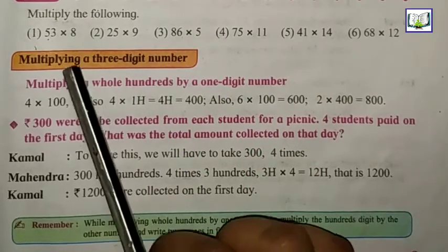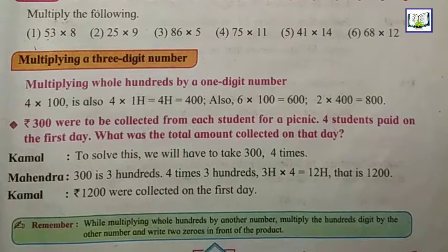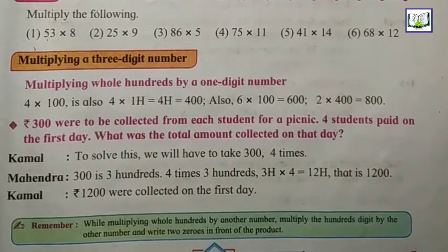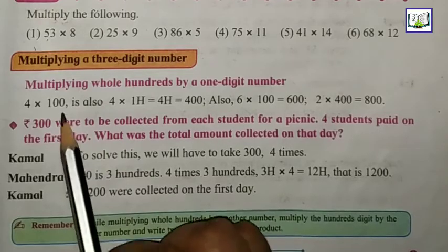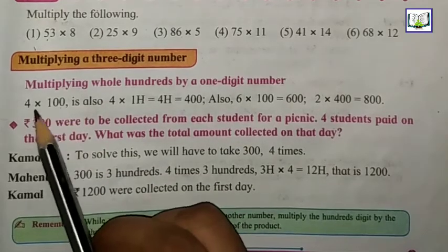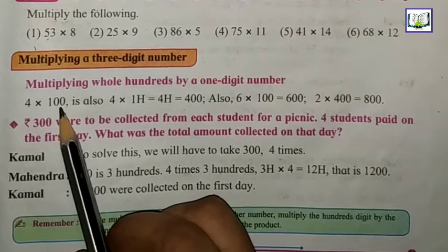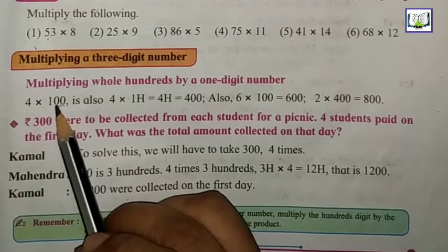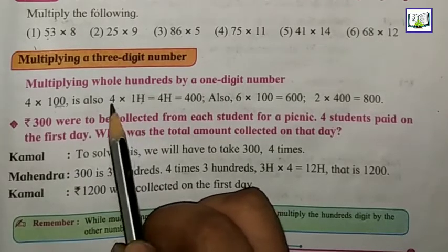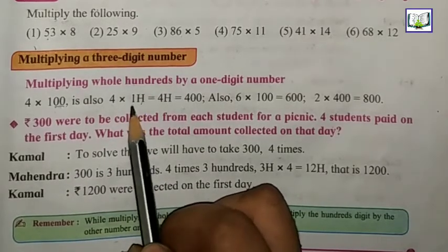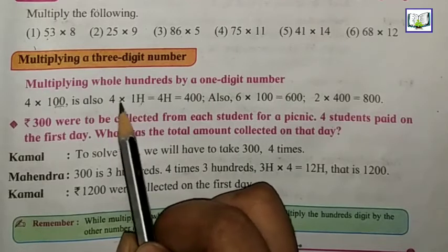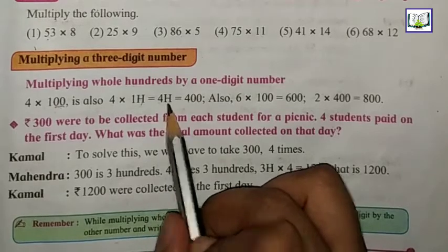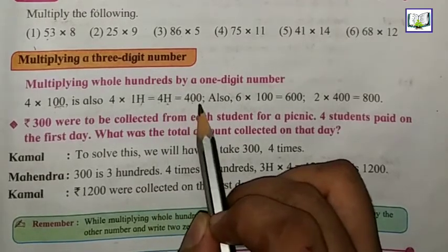Now we will move to multiplying a 3-digit number. Until now we were doing 2-digit numbers. Now we will move to 3-digit numbers. The first 3-digit number is 100. If we multiply 4 by 100, we can write 100 in shortcut. These 2 zeros, we can also write it as H. So 4 into 1H means 100, which equals 4 ones are 4, so 4H. H means how many zeros? 2 zeros. So it becomes 400.